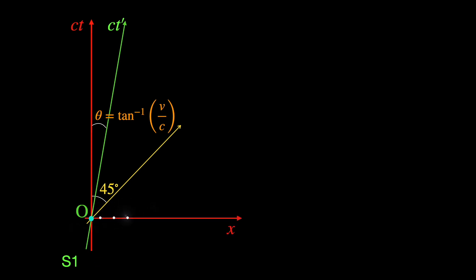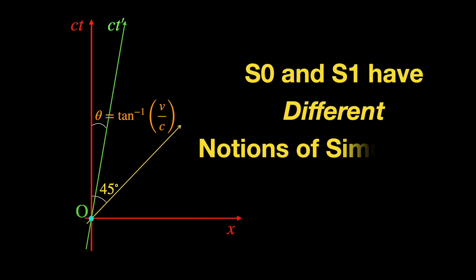It represents the collection of events that look simultaneous with event o from our point of view. The space axis of s1 will also pass through o representing a different collection of events also simultaneous with o but from the perspective of s1 frame observers. And the second postulate of relativity ensures that observers in s0 and s1 have different perceptions of simultaneity.